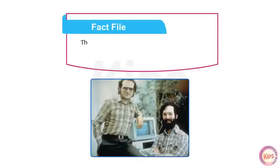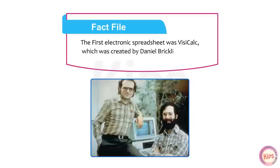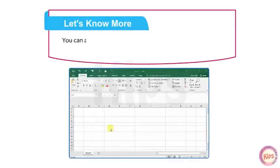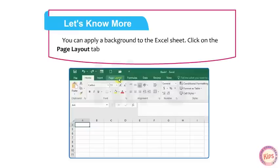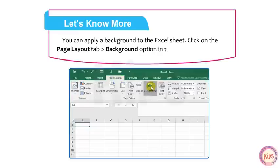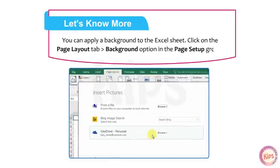The first electronic spreadsheet was VisiCalc, which was created by Daniel Bricklin and Bob Frankston in the early 1980s. Note that you can apply a background to the Excel sheet. Click on the Page Layout tab, then go to the Background option in the Page Setup group.